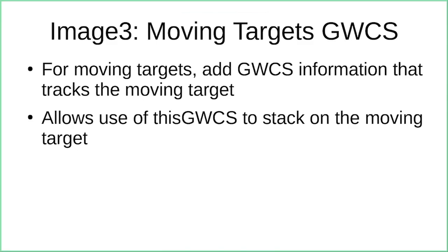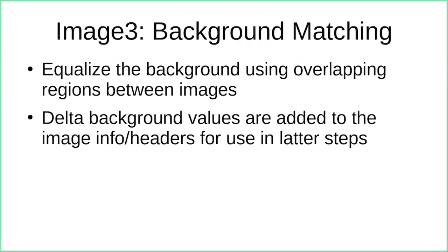Based on lessons learned from previous missions, JWST supports moving targets from the start. For moving targets, a world coordinate system that tracks the moving target is added, so all later stages of the pipeline can mosaic in that coordinate system — creating a mosaic of a planet, asteroid, or other moving target. The next step is background matching: in overlapping regions, the background is equalized. That information is saved in the image header rather than updating the images directly, so it can be used in later steps.